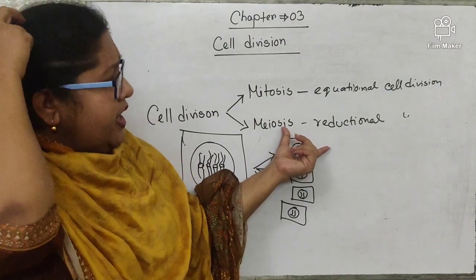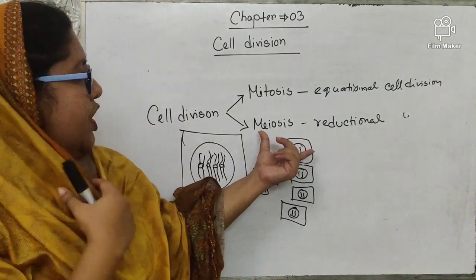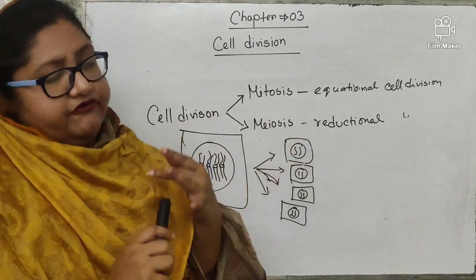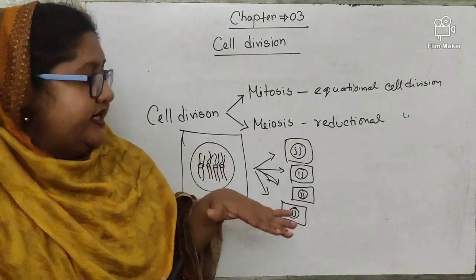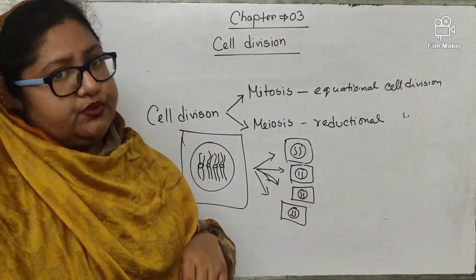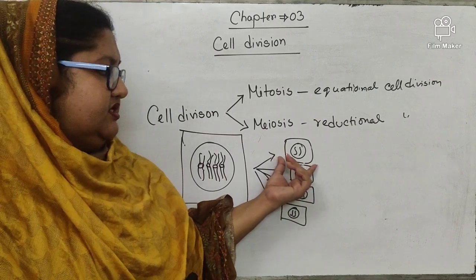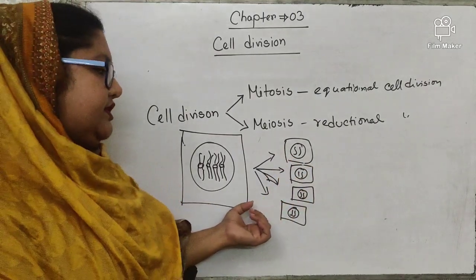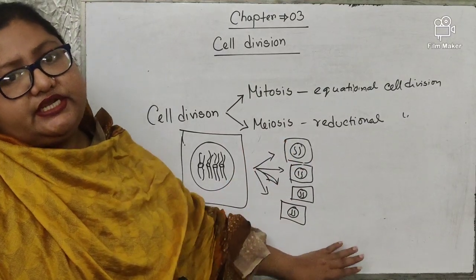When answering why meiosis is known as reductional cell division, first write the definition, then in the second paragraph write: hence, during meiosis cell division the number of chromosomes in the daughter cell becomes half that of the mother cell. That is why meiosis is known as reductional cell division.